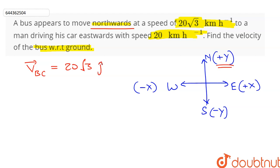On the other hand we have been given the velocity of the car and it is 20 kilometer per hour in the east direction, that is i cap kilometer per hour.